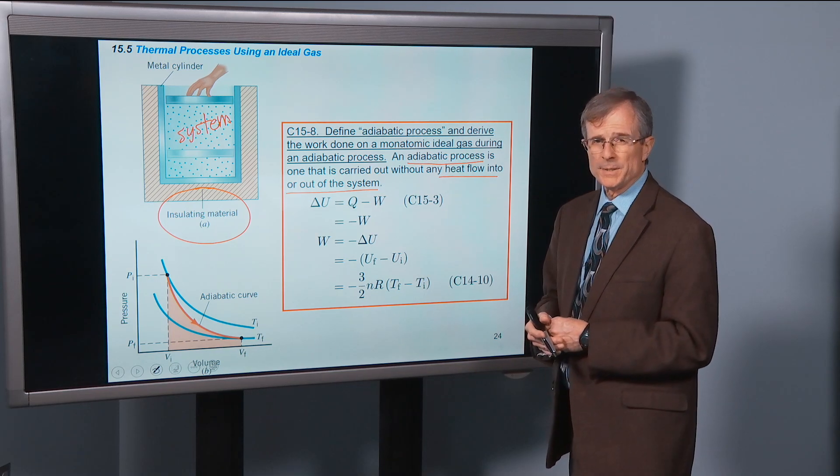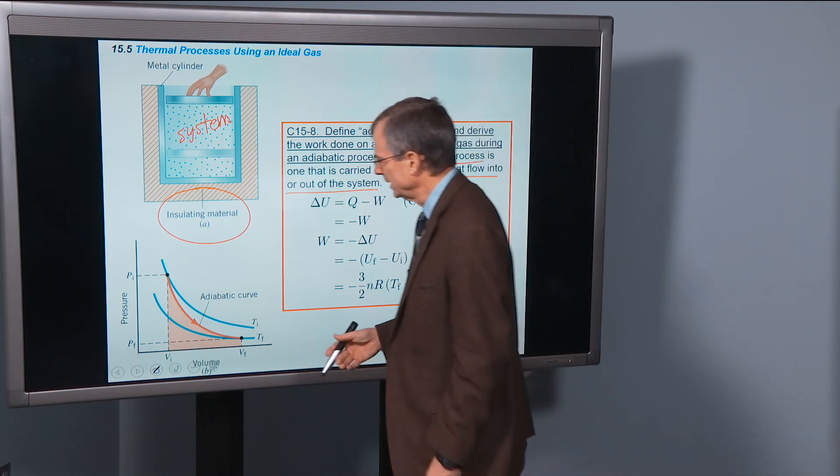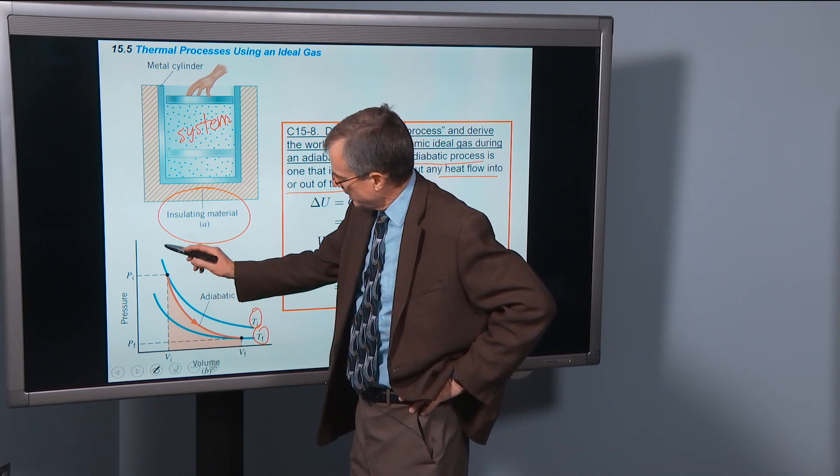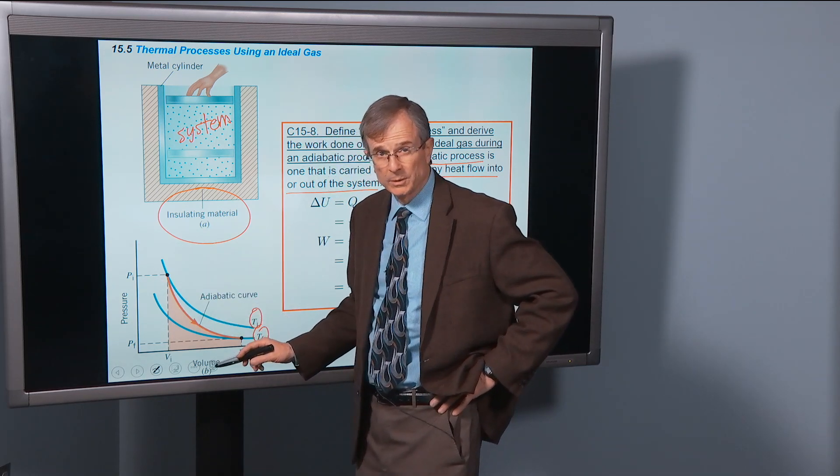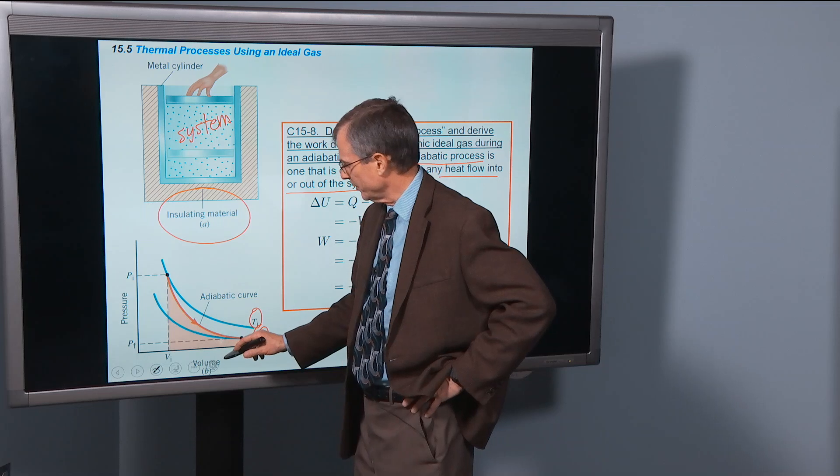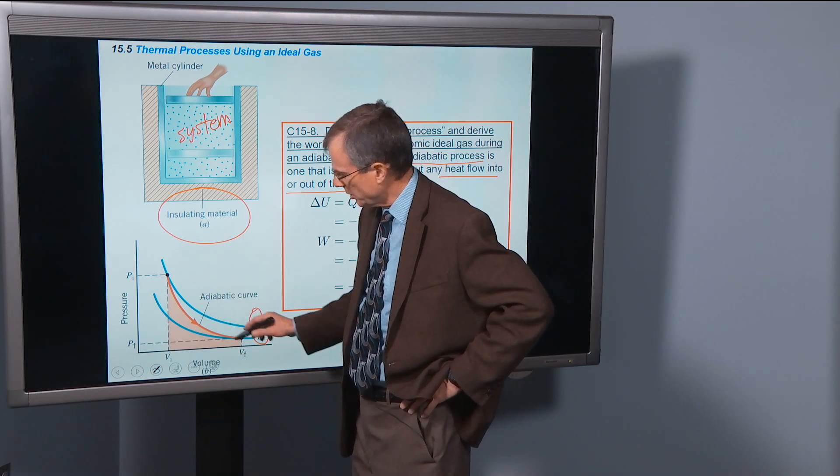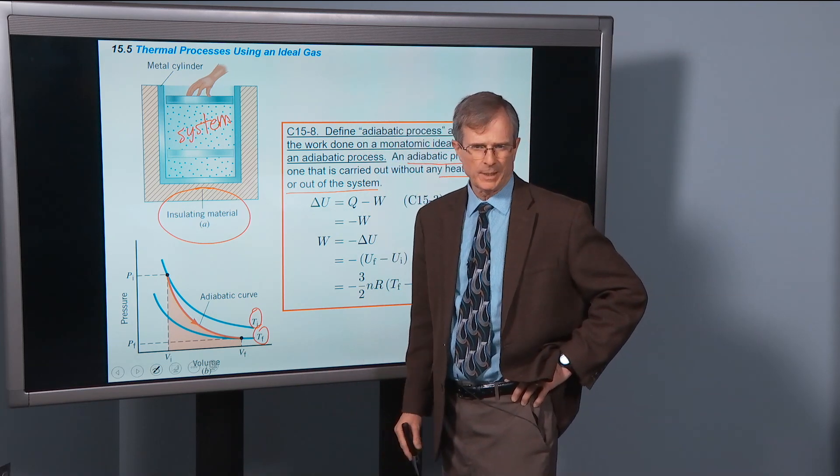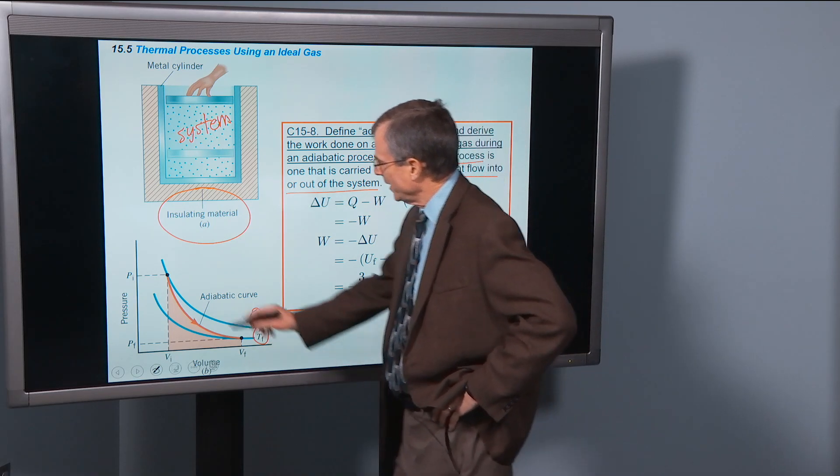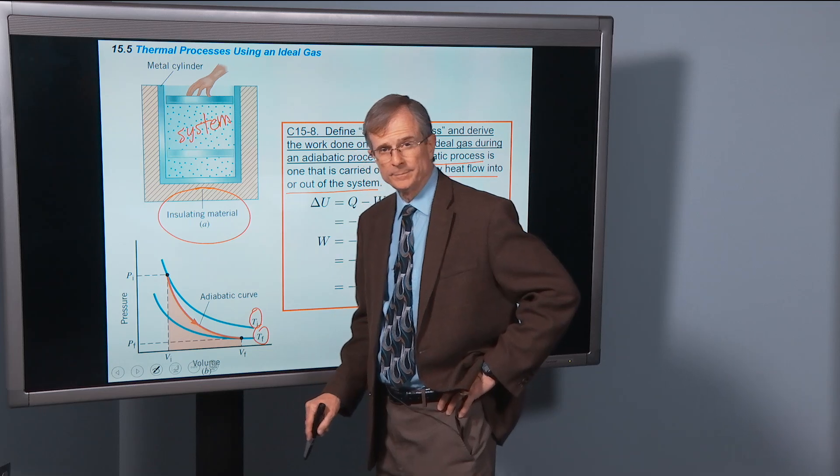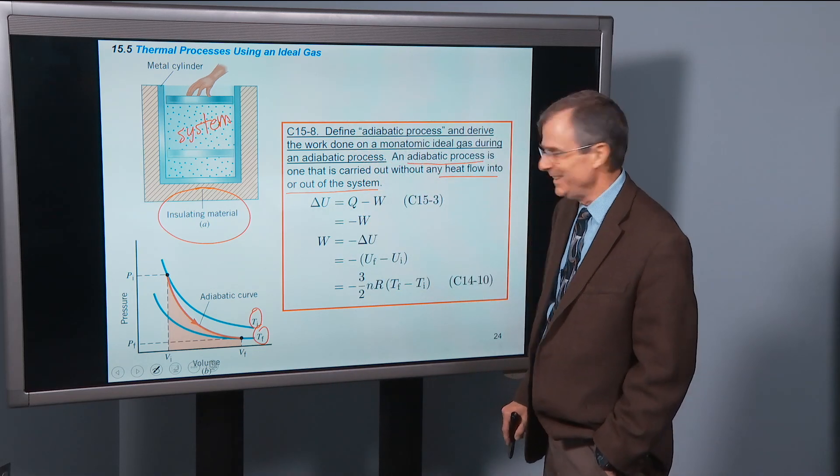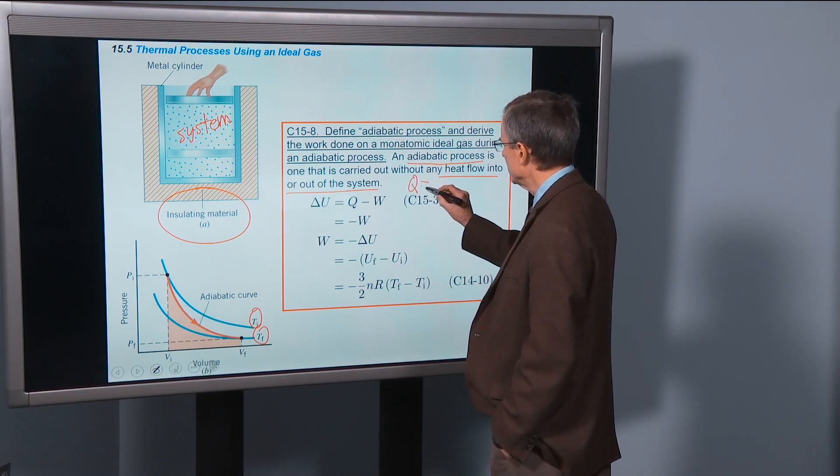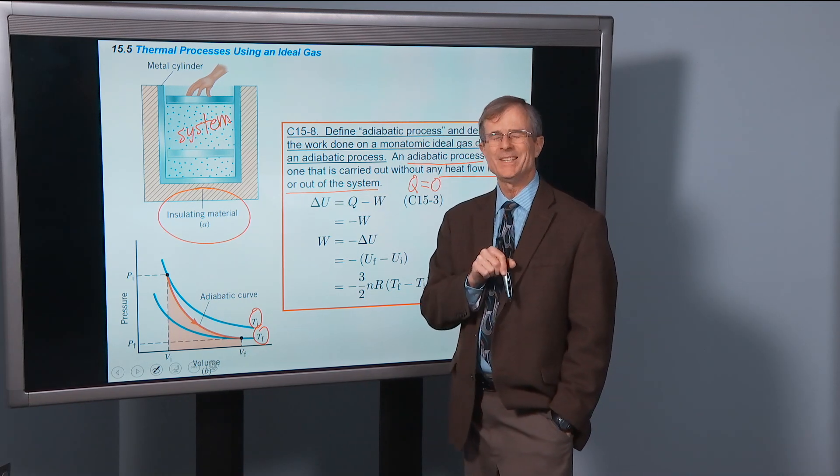So how do you find the work done by the system? Well it's a complicated curve. Here are two isotherms for the initial and the final temperatures. These blue curves are isothermal lines where the pressure goes like one over the volume, and the temperature is constant. This red curve is what the adiabatic curve looks like. And its shape is complicated. But how do you find the area under that curve in order to find the work done? And that is actually easy. If there's no heat flow into or out of the system, the heat added to the system is zero.